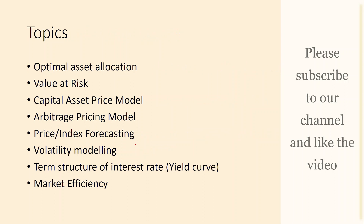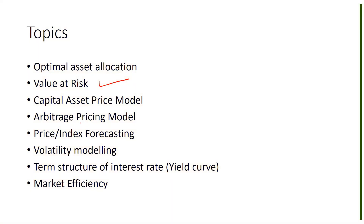The topics that come under financial econometrics include — first, optimal asset allocation, which is very important for portfolio management. Portfolio managers use financial econometrics to come up with optimal asset allocation. Then value at risk is very famous in risk management and market risk, where you quantify risk based on movement in the market prices of different assets. And then the capital asset pricing model — a very famous model to price different assets.